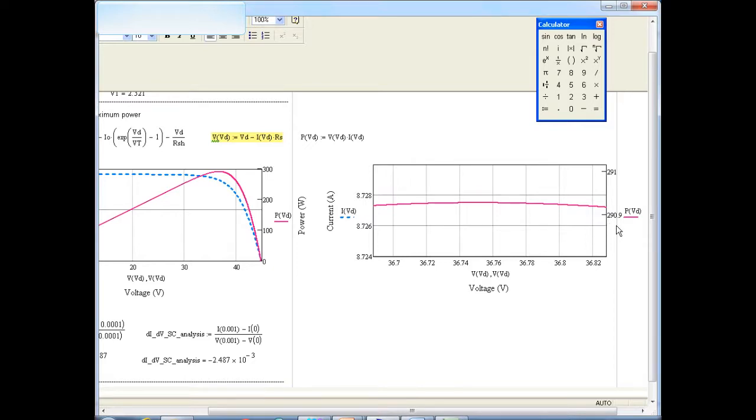The actual value given in the data sheet, which is obtained by taking the product of VMP and IMP, came out to be 290.2. So we are very close to that value.